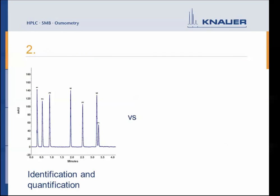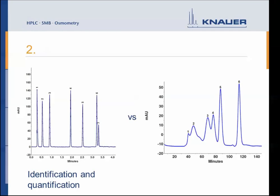Here you can see a classical HPLC chromatogram. The aim of an HPLC measurement is the analysis of a compound — you would like to identify and quantify it. In the chromatogram you can see very sharp peaks that are baseline separated. In comparison, a classical FPLC chromatogram looks a bit different: the peaks are not as sharp and compounds are usually not baseline separated.